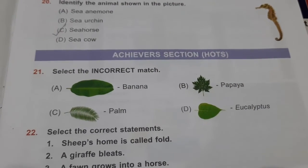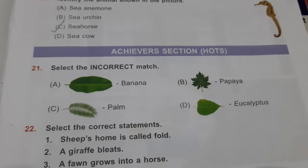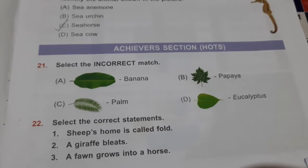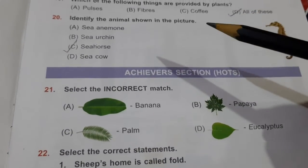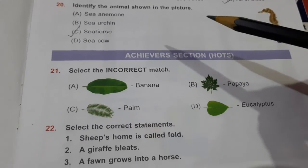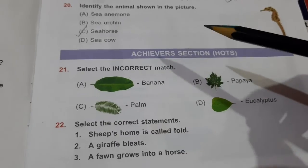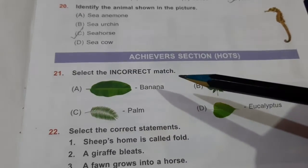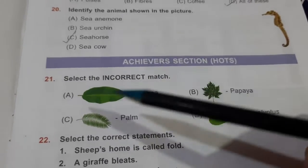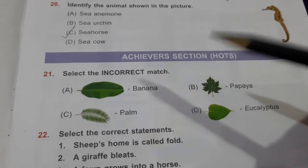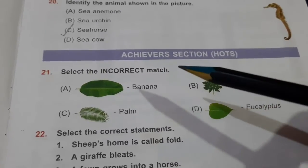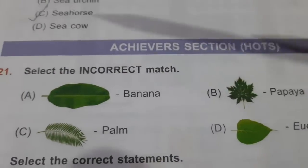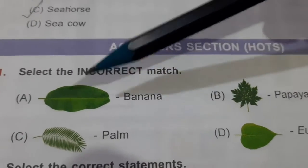Let us look at the last section, which is the Achievers section of this chapter. All questions in this section carry two marks each. Let's get started. Select the incorrect match — out of all four options, there is one match which is incorrect.